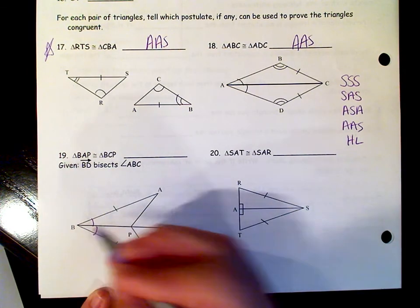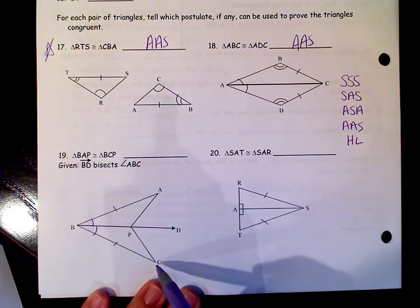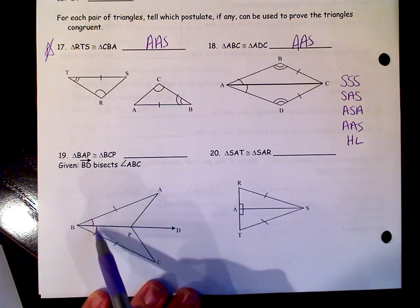Therefore, it creates congruent angles. So angle ABP and CBP are congruent to each other.